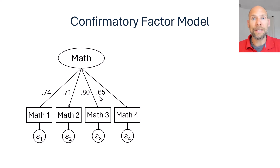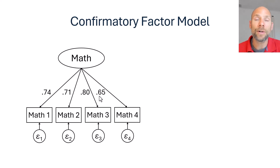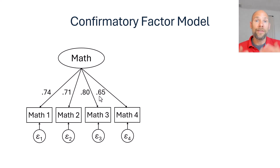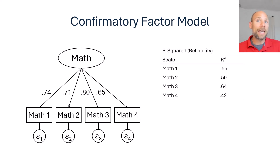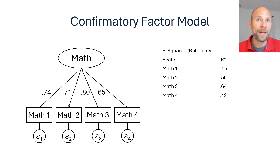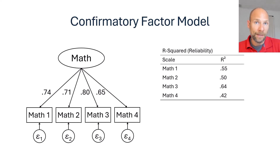According to classical test theory, reliability is also equal to the squared correlation between the observed variable and the underlying latent true score variable. Therefore, we can use the squared standardized loadings from the single factor congeneric measurement model to estimate the reliability of each subscale. I did this in JASP, which is a free, point-and-click software program that uses the lavaan package from R to estimate confirmatory factor models.